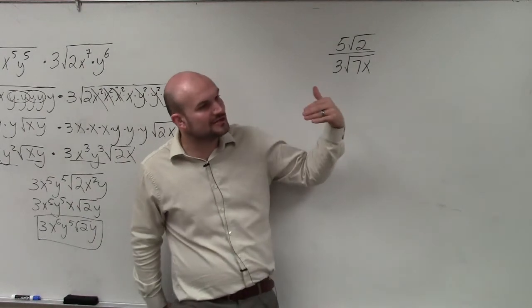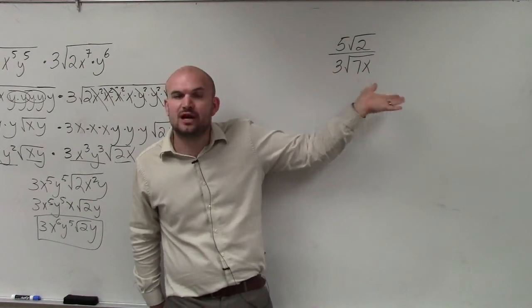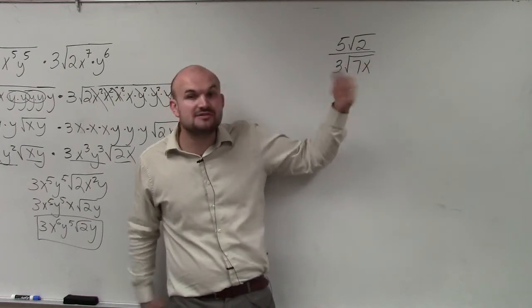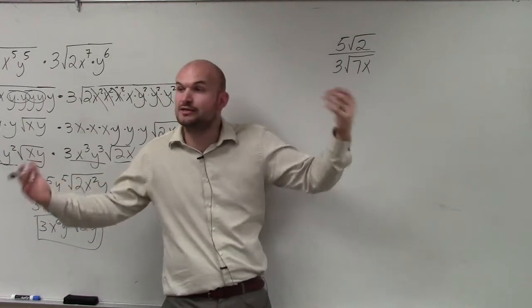Well, what we can do is one of the things to have this simplified is not to have a root in our denominator. So to eliminate the root in the denominator, what we need to do is find values that we can take the square root of. Or if we had a cube root in the denominator, find values we could take the cube root of.